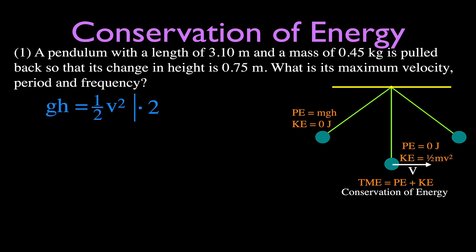Multiplying both sides by two gives us V squared equals 2GH. Taking the square root of both sides, the velocity of the pendulum equals the square root of 2 times G times H. It's interesting to note that mass is not in this equation — as explained in a previous video, mass does not affect the velocity of the pendulum.